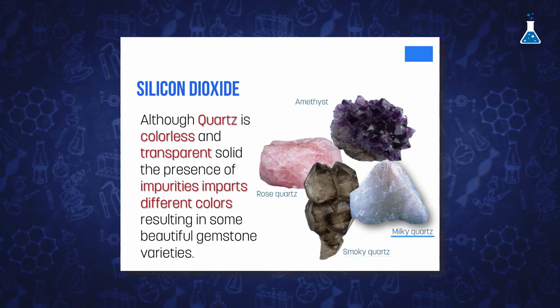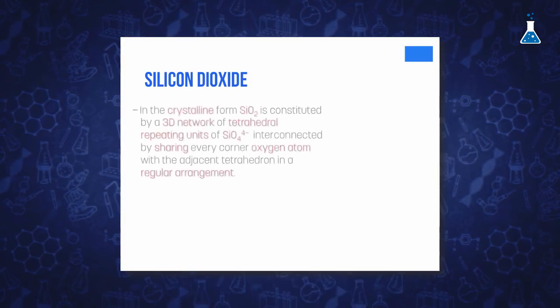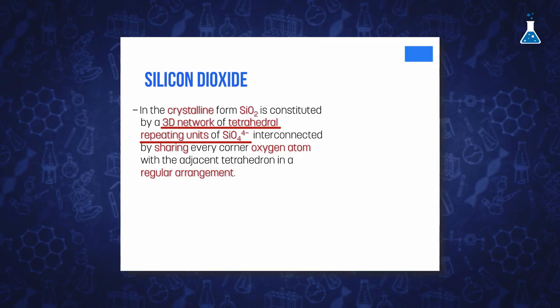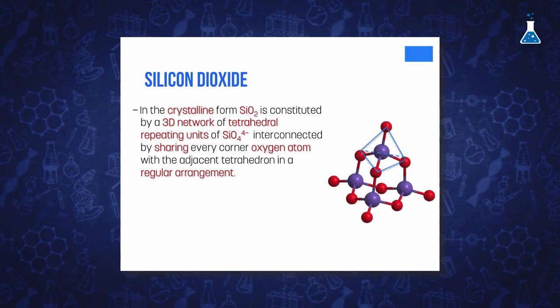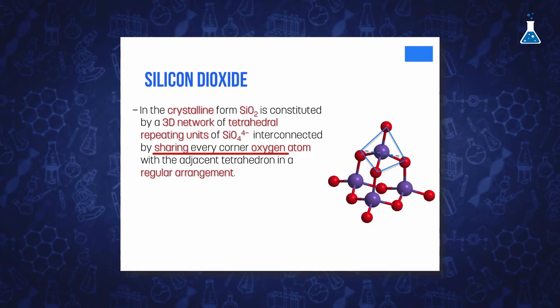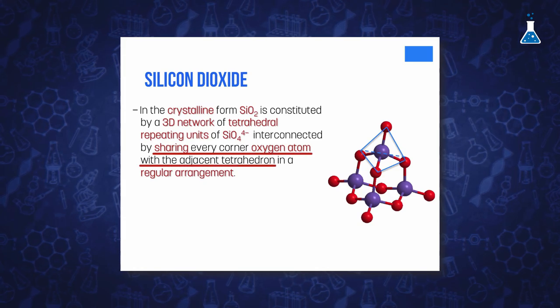When silica is in the crystalline form, as in quartz, it is constituted by a three-dimensional network of tetrahedral repeating units of SiO4 which are interconnected by sharing every corner oxygen atom with the adjacent tetrahedron.